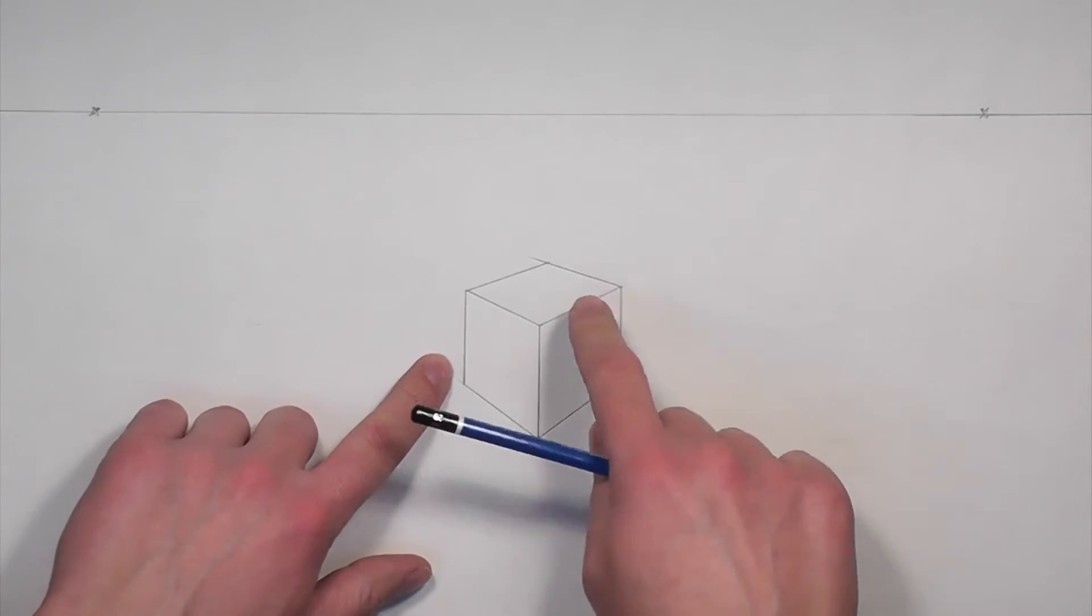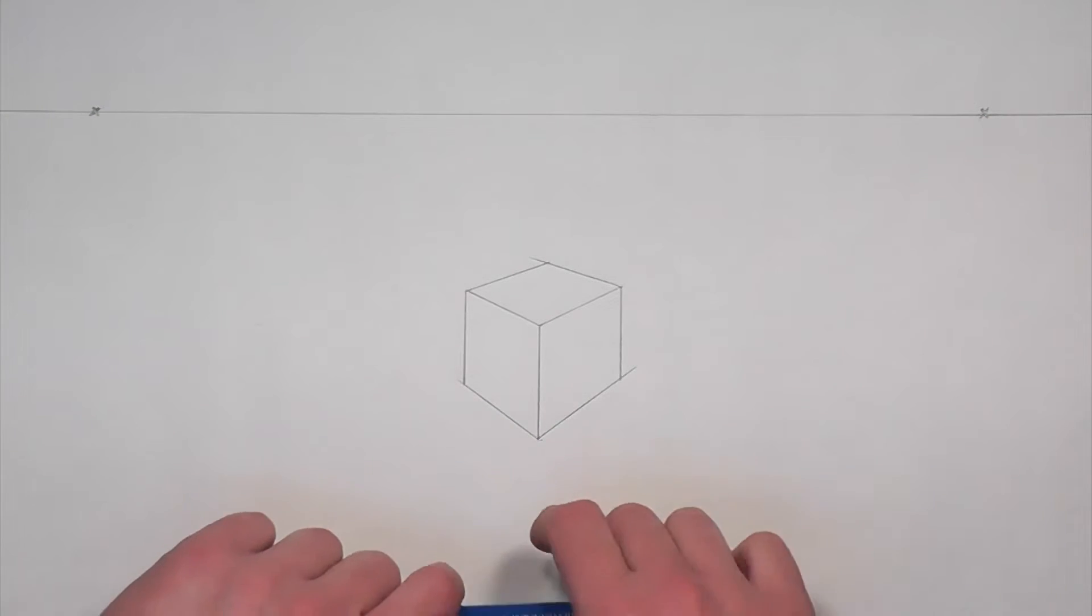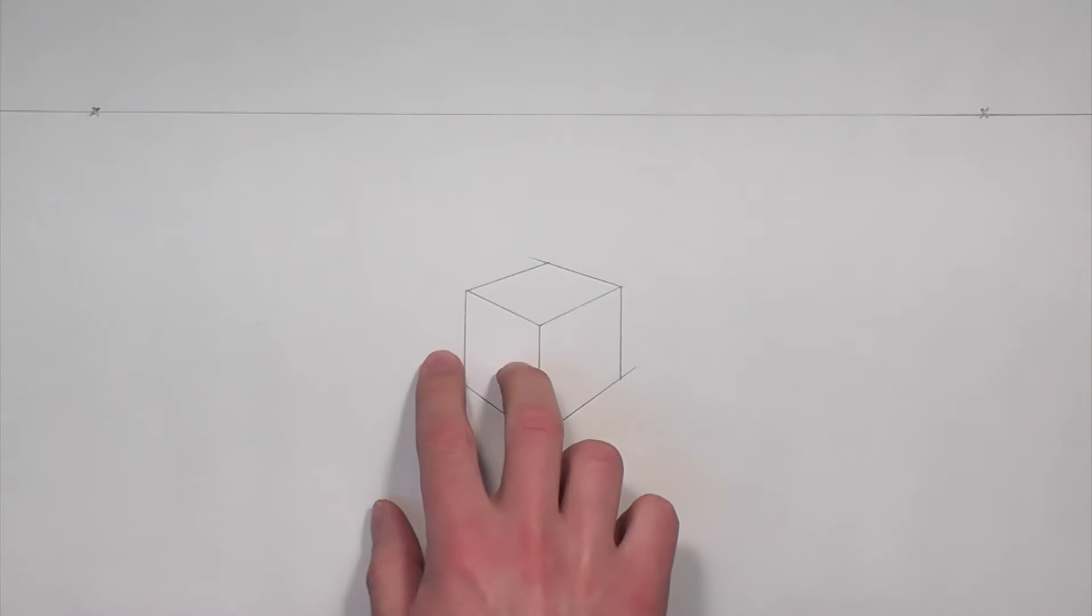When drawing a cube that's equidistant from both vanishing points, it's appropriate to have the left side and the right side be equal.